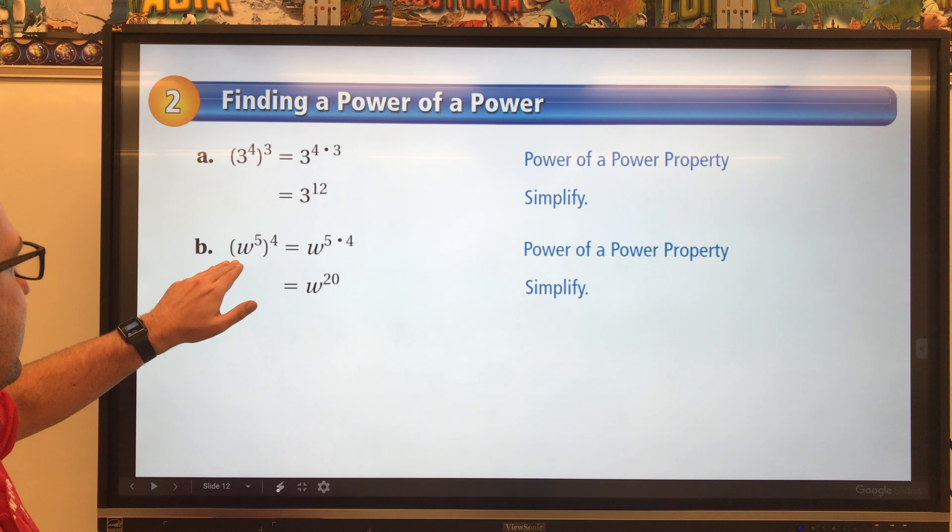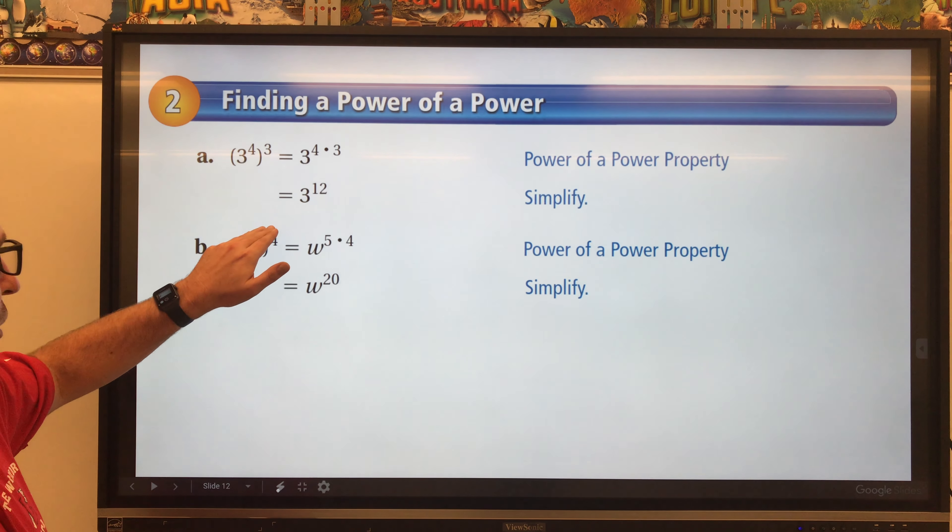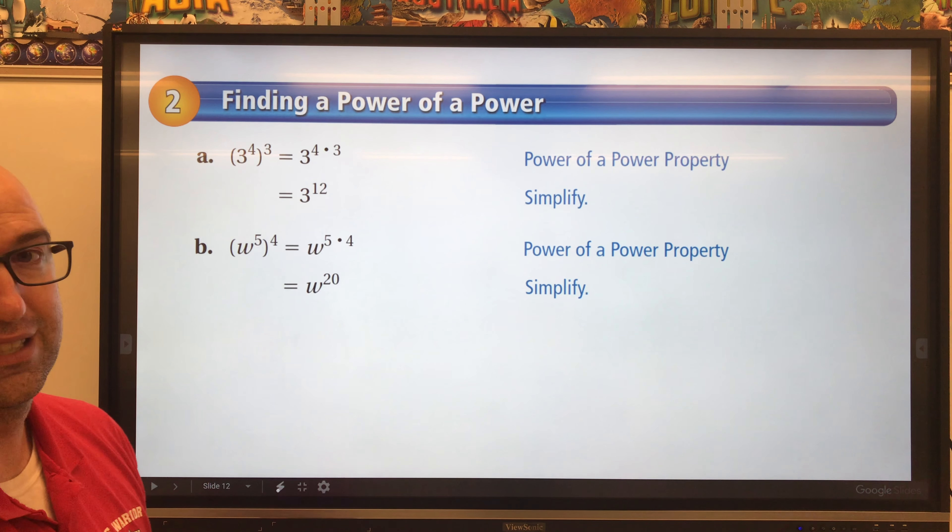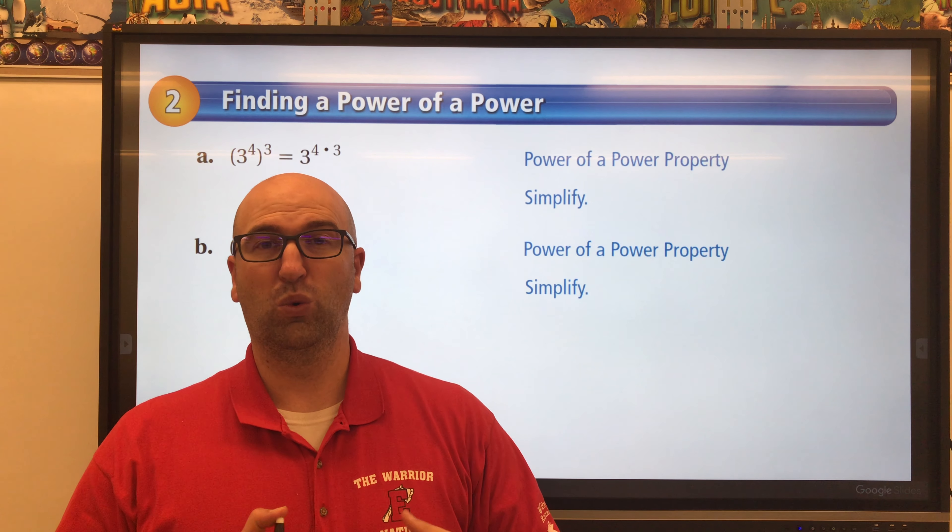Same thing. W is our base. W to the fifth to the fourth. Since we have a power of a power, we multiply those powers together, and that gives us W to the twentieth.